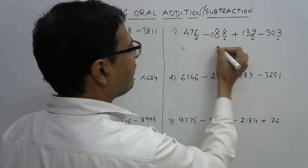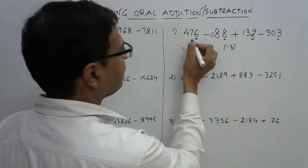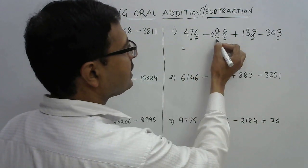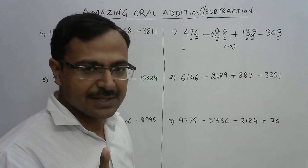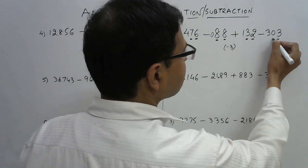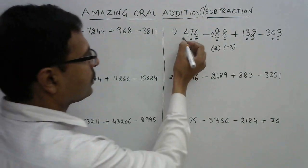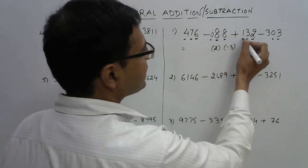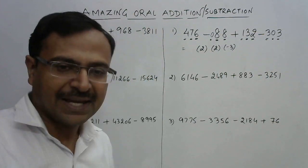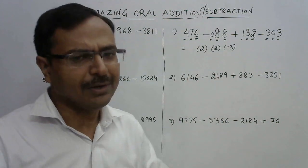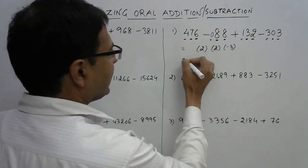So 6 minus 8 is minus 2, minus 2 plus 2 is 0, and 0 minus 3 is minus 3. I write minus 3 in the first step starting from the right-hand side. Next: 7 minus 8 is minus 1, plus 3 gives plus 2, and plus 2 minus 0 is plus 2. Then: 4 minus 0 is 4, 4 plus 1 is 5, and 5 minus 3 is 2. So now I have three numbers. Now let's do the borrowing part.